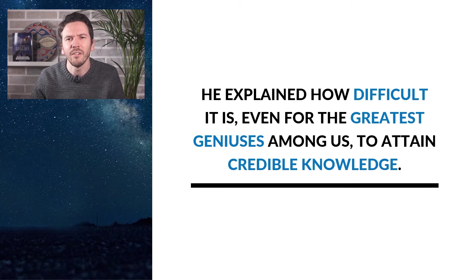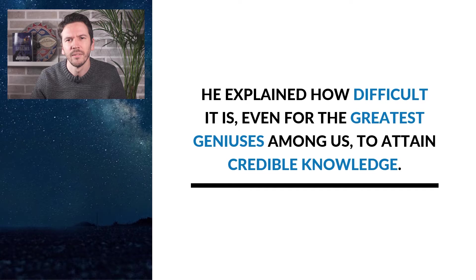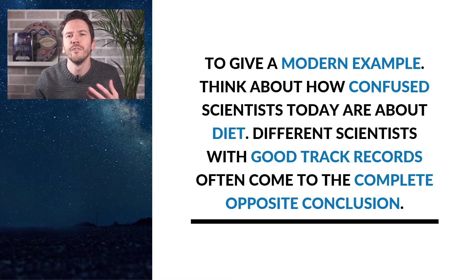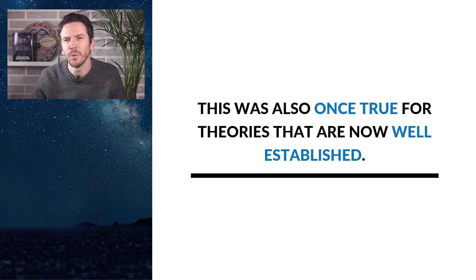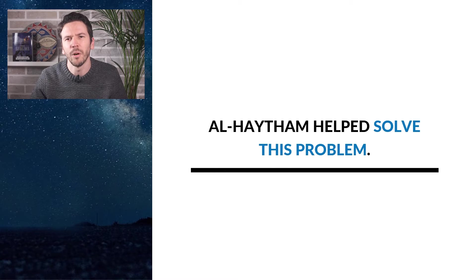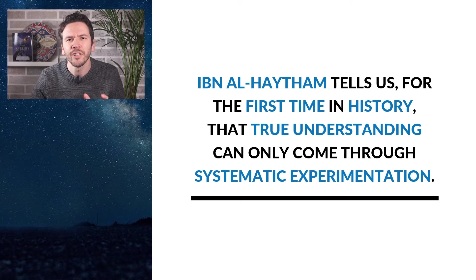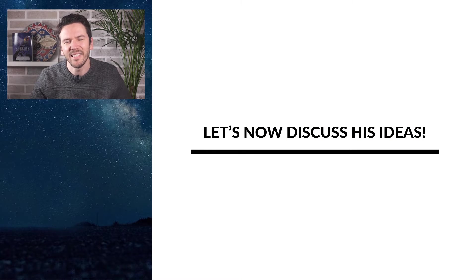Al-Haytham explained how difficult it is, even for the greatest geniuses among us, to attain credible knowledge. Think about how confused scientists are about, say, diet — different scientists, all with good track records, often come to the complete opposite conclusion. Al-Haytham helped to solve this problem. He tells us, for the first time in world history, that true understanding can only come through systematic experimentation. Let's now study his ideas.